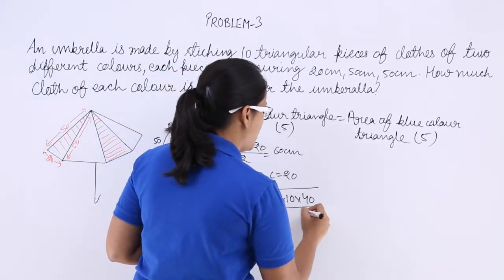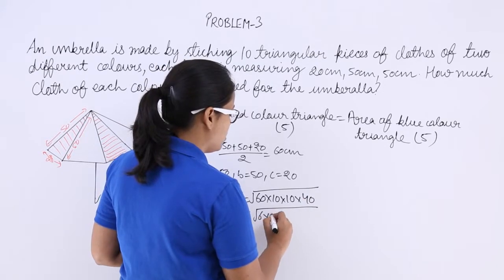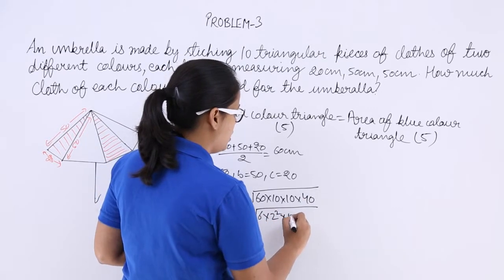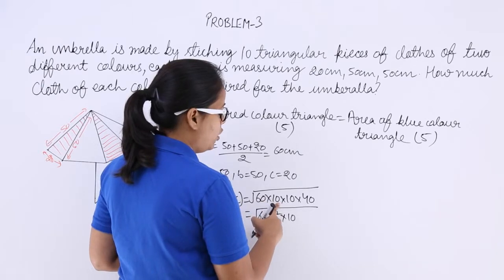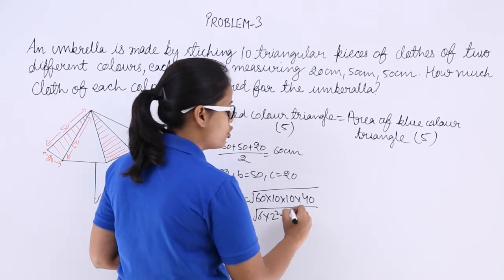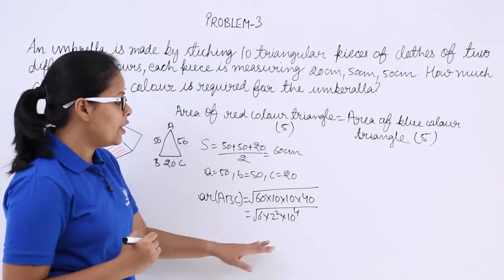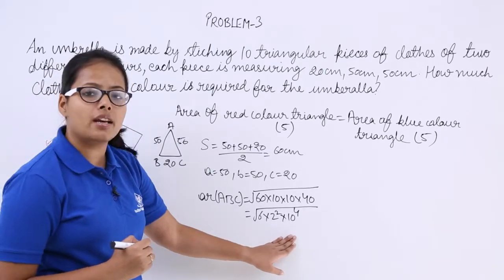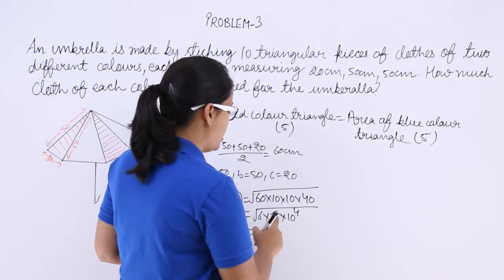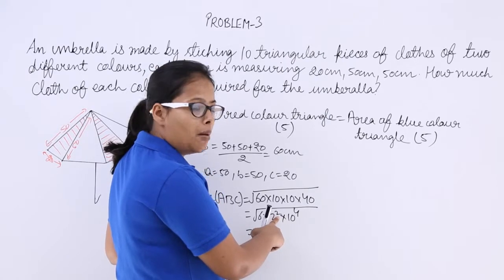Now let's get all these zeros together. How many zeros are there? 1, 2, 3, and 4. So 10 raised to power 4. When you take the square root of 2 and 10, what you will get? Power of this will become half, so this will be 2.